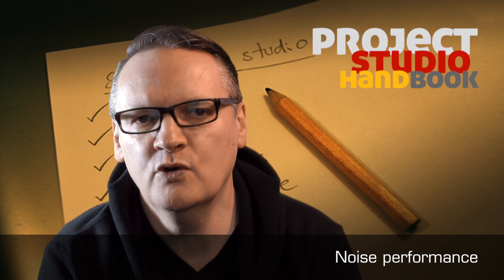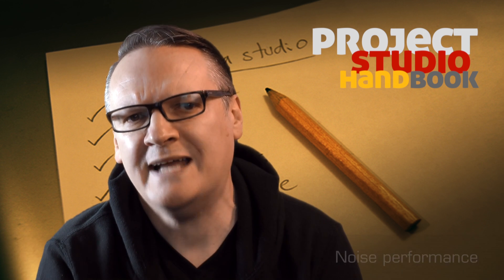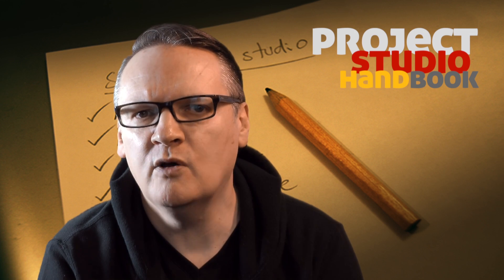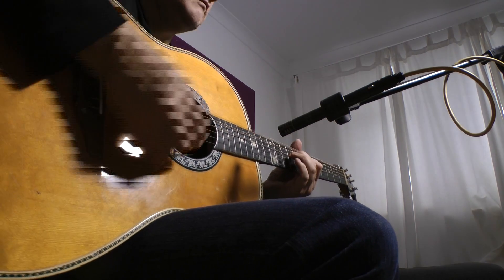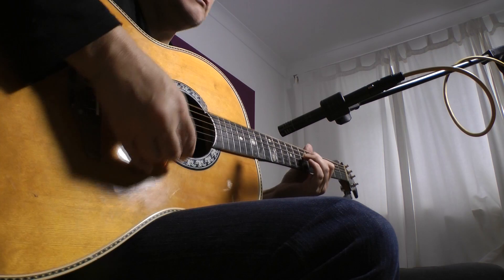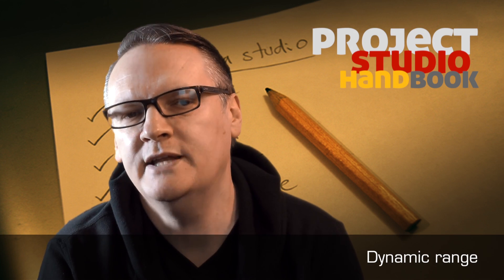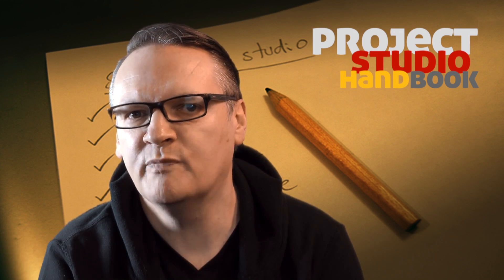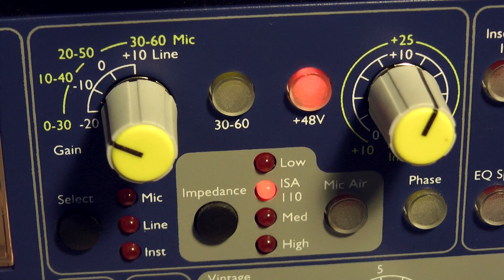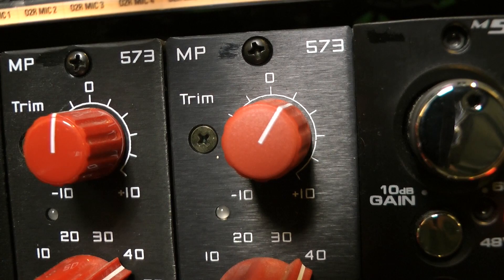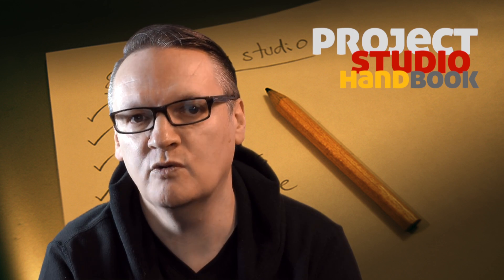Secondly, noise performance. Specifications can contain various confusing statistics on noise and distortion, and most mic pres perform well or adequately. However, if we plan to record a quiet or delicate sound, we may want to check noise performance audibly. And lastly, dynamic range — an input gain range of between 0 and 60 dB is typical and should accommodate most situations, especially if a trim control offers another 10 dB or so of additional gain.